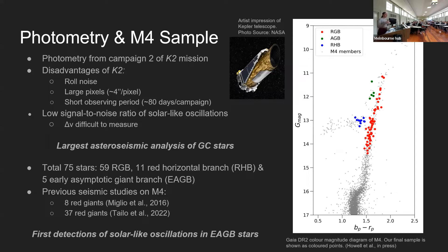Another disadvantage was that the telescope had large pixel sizes of roughly four arcseconds per pixel, making it really hard to distinguish between stars that are very close, especially in the cluster center, so you can really only study the outskirts of the cluster. The K2 campaign observing periods of roughly 80 days are also not optimal for cluster stars — you really need longer observations to resolve the signals. Once we took the power spectra of our final light curves, there was low signal-to-noise in the solar-like oscillations, which ultimately affects the measurement of the delta_nu parameter, since if we can't differentiate between signal peaks and noise peaks we can't accurately measure it.